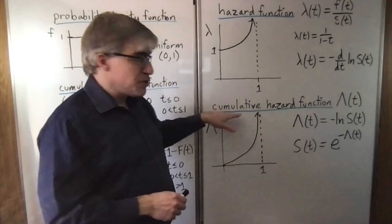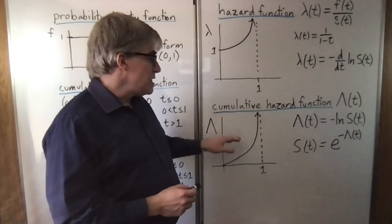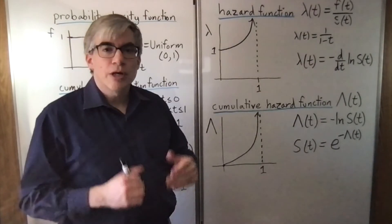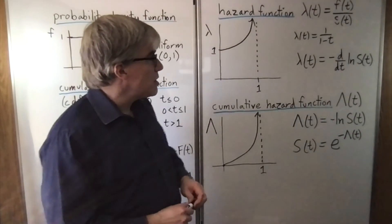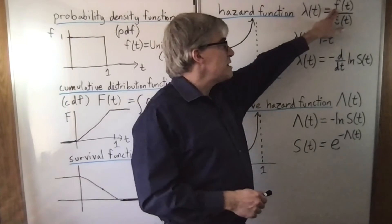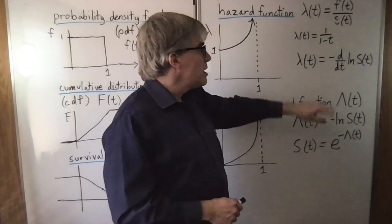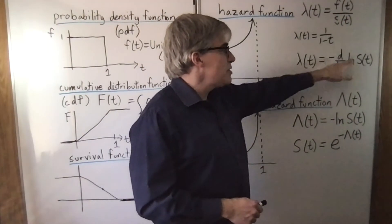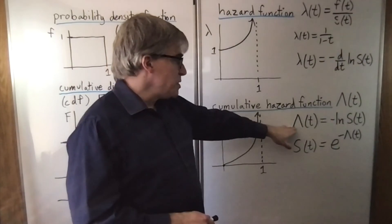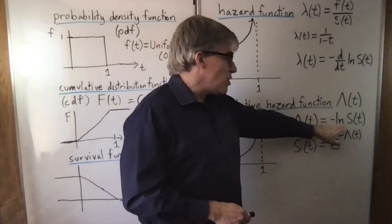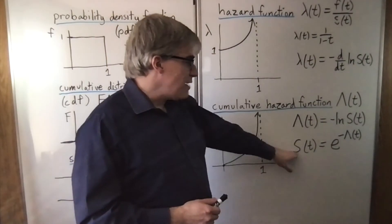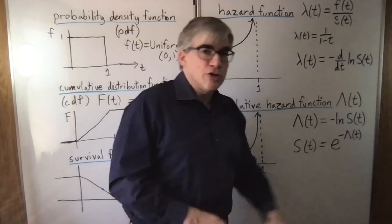The cumulative hazard function, like it sounds, is the integral of the hazard function. The common relationships between these are: lambda is density over survival. It is also negative derivative of the log of the survival. Cumulative hazard is negative log of survival. And the survival is e to the negative cumulative hazard.